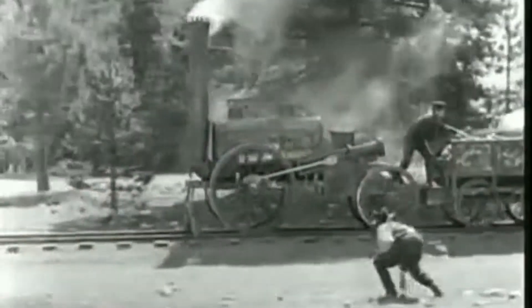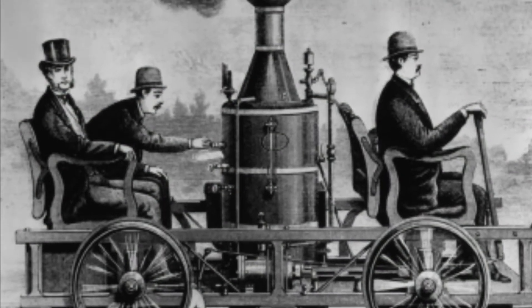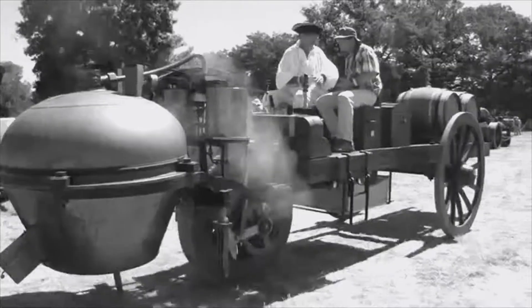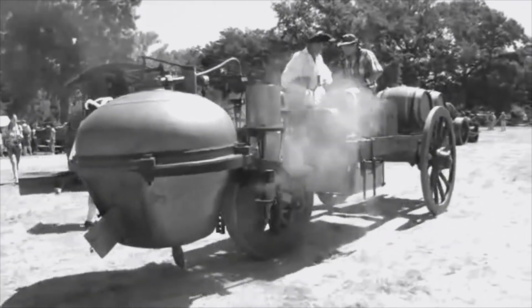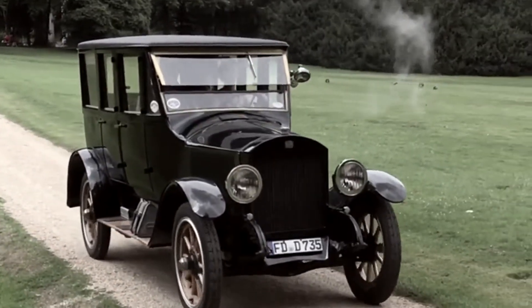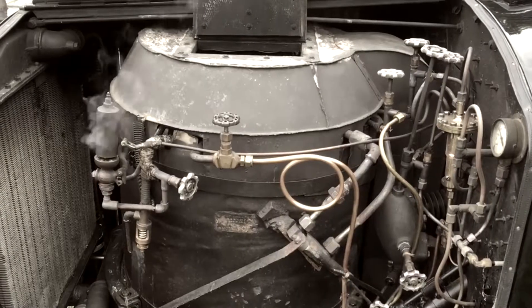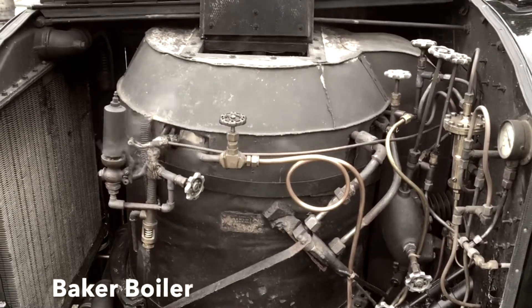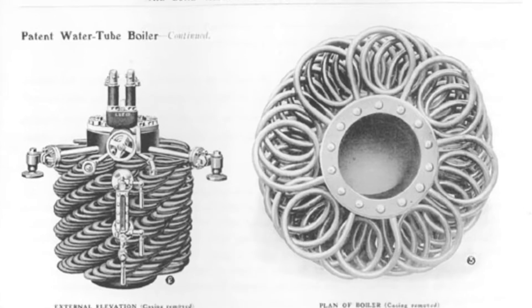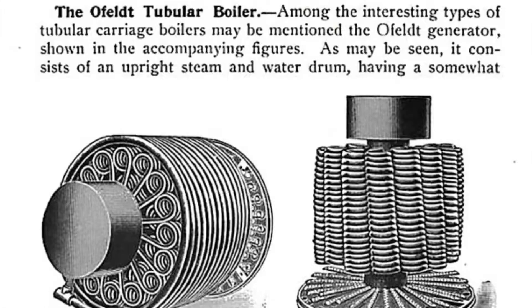Spiral Water Tube Boiler: While the fire tube boiler developed alongside trains, the water tube boiler design was developed in tandem with car technology. The birth of car technology in 1770 by Nicholas Joseph Cugnot encouraged the development of steam-engine cars in the 1800s, most of which used spiral water tube boilers with different designs. Since then, spiral water tube boilers have developed into various uses, including designs such as Climax Boilers, Loon Valley Boilers, Monotube Boilers, The Baker Boiler, and Offelt Boilers.